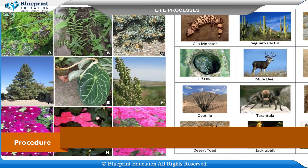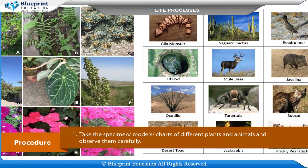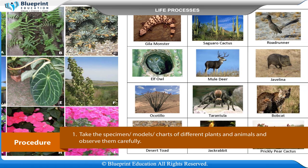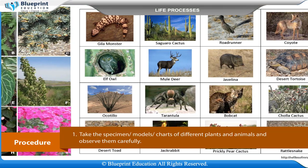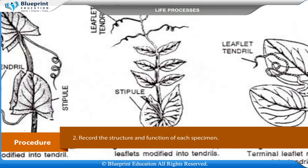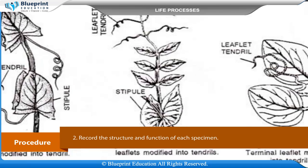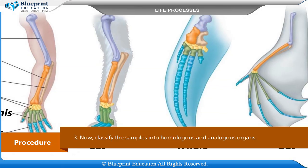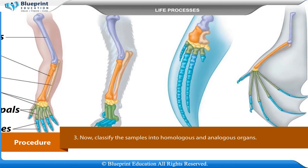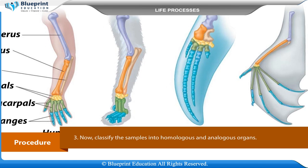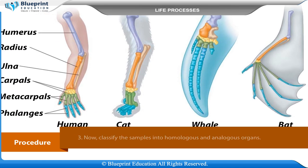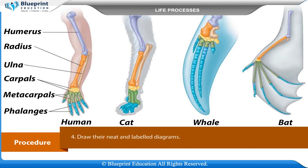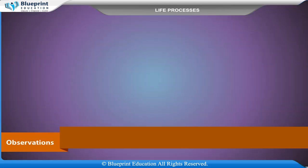Procedure: Take the specimen models and charts of different plants and animals and observe them carefully. Record the structure and function of each specimen. Now classify the samples into homologous and analogous organs and draw their neat and labeled diagrams.